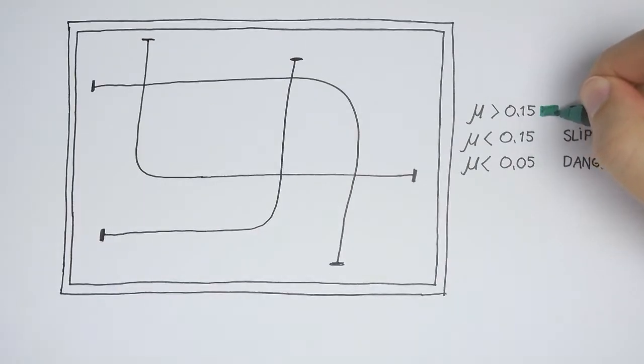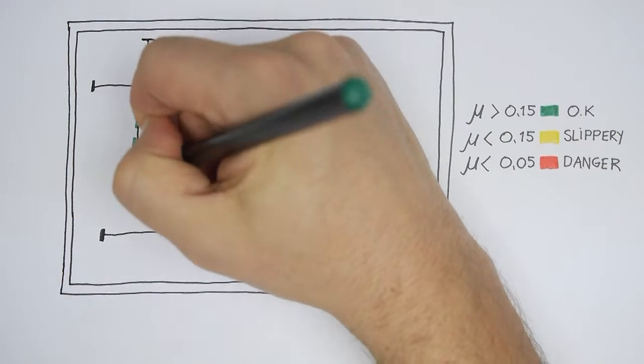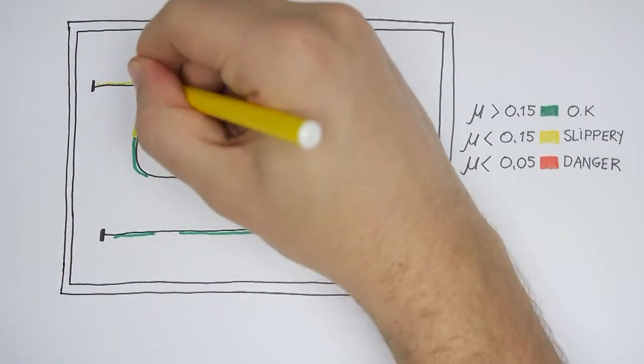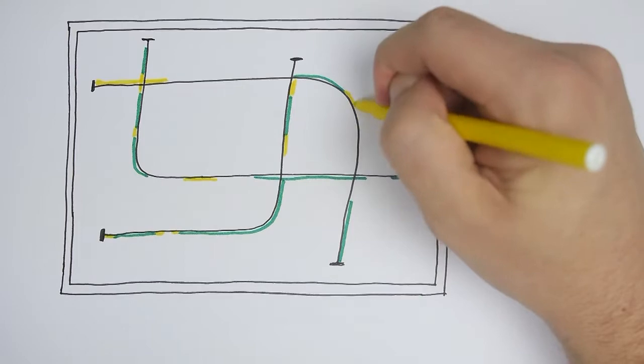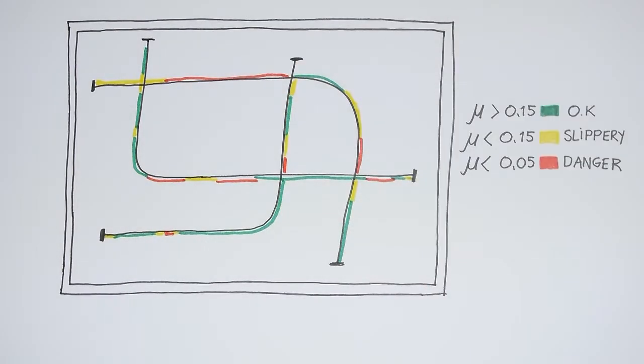The data is shared with all drivers in the network, creating a map of slipperiness which is updated every time a train with tribometer passes. Now, all drivers in the network know how to drive optimally.